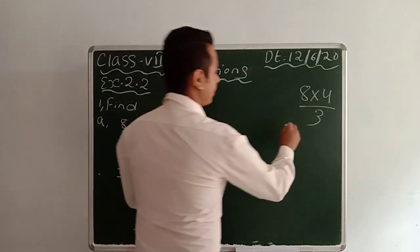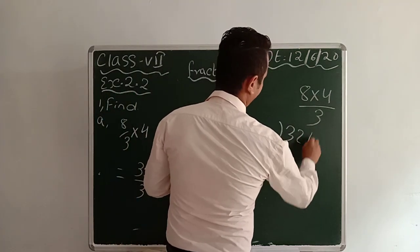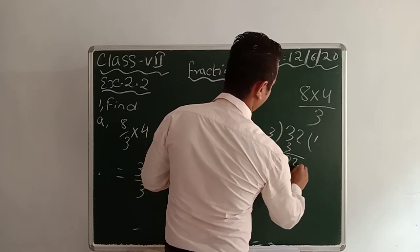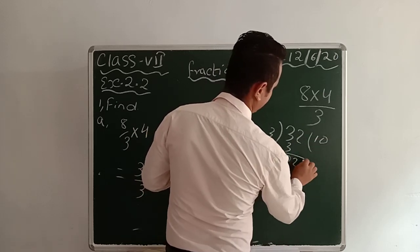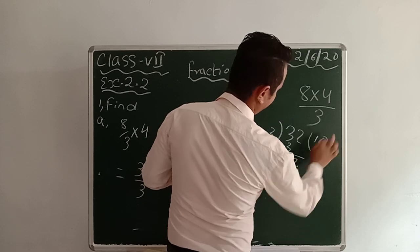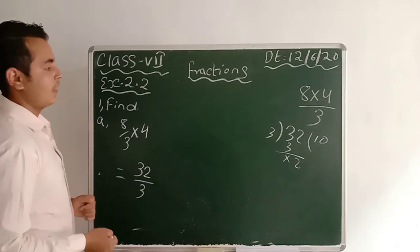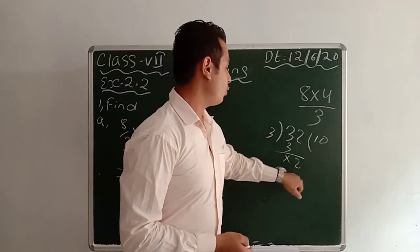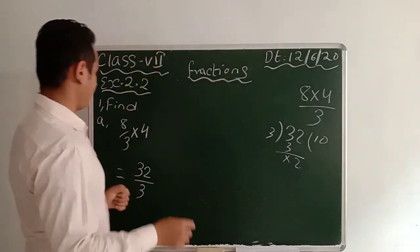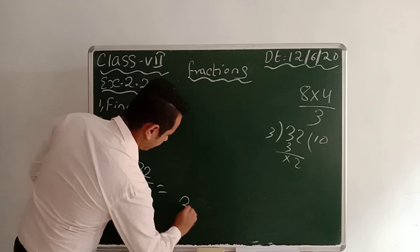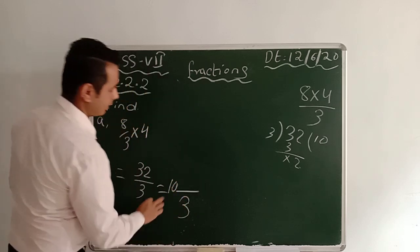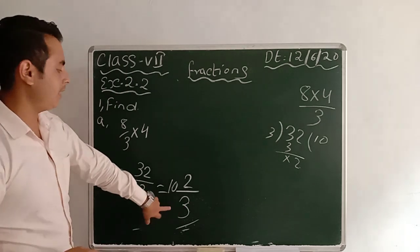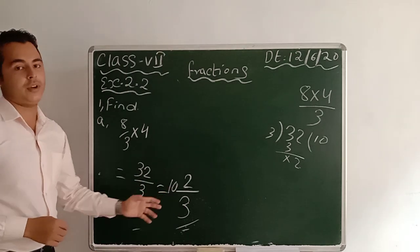Now you should divide 32 by 3. 3 ones are 3 — dividing 32 by 3 gives you 2 as a remainder and 10 as the quotient. So you can write this as 3 into 30 plus 2. This is also your answer — you can write it as 10 and 2/3.